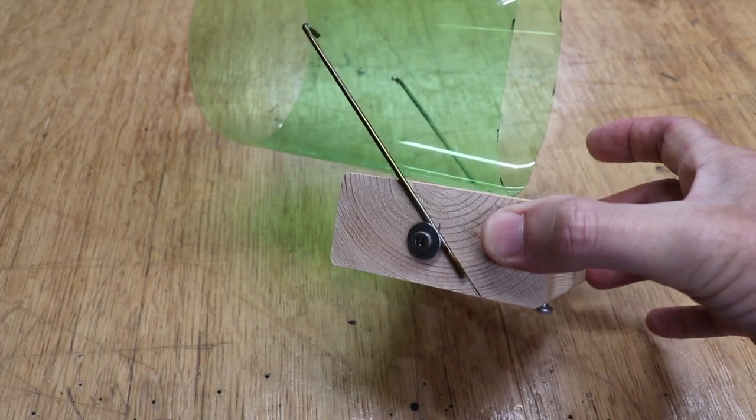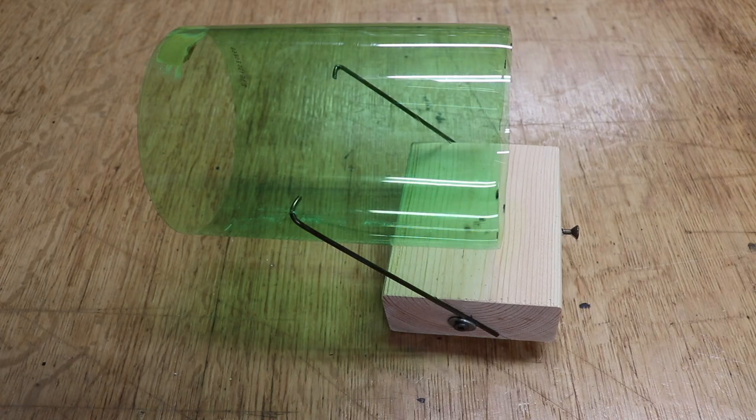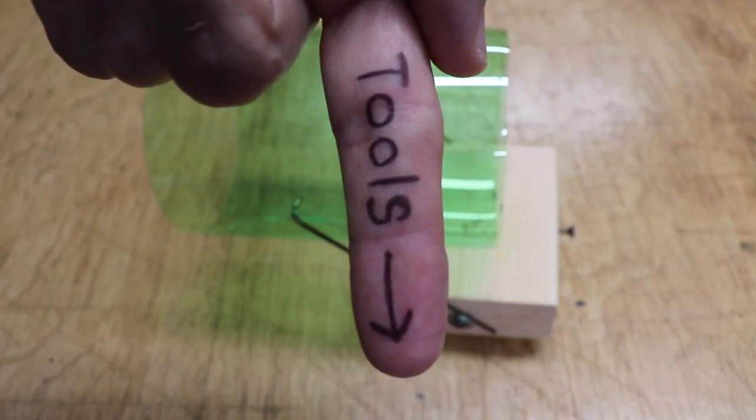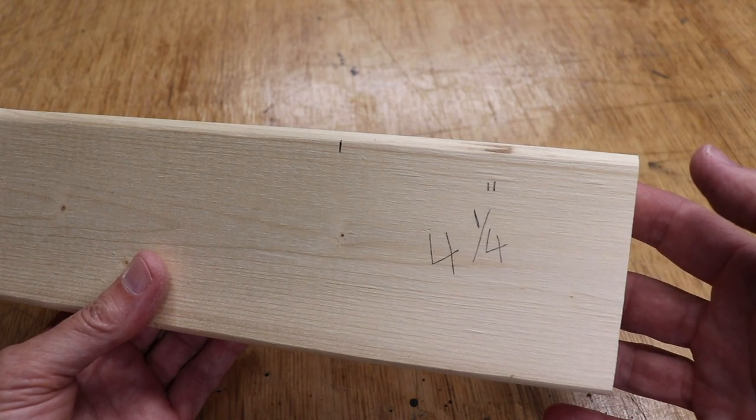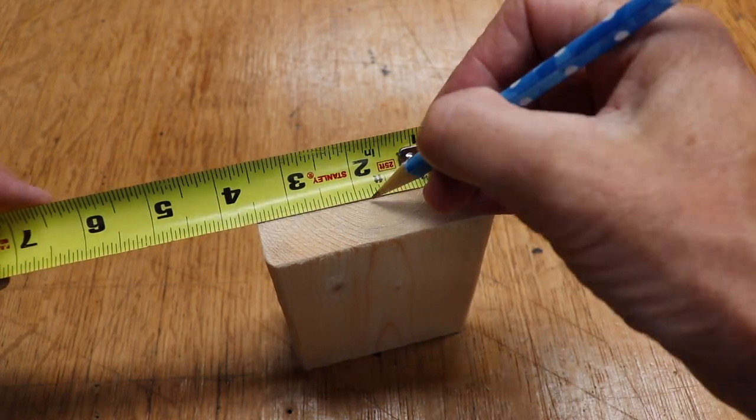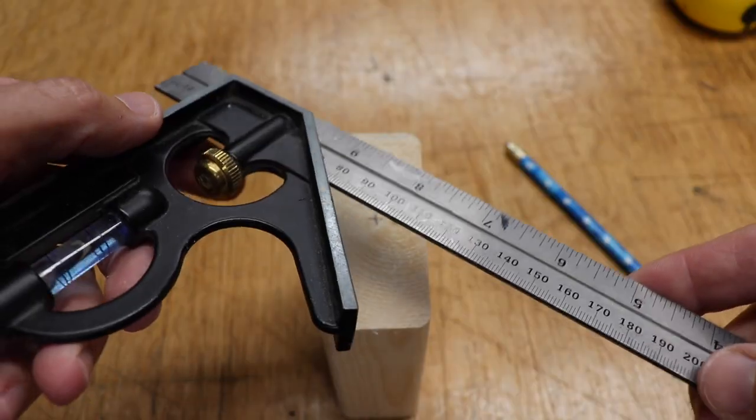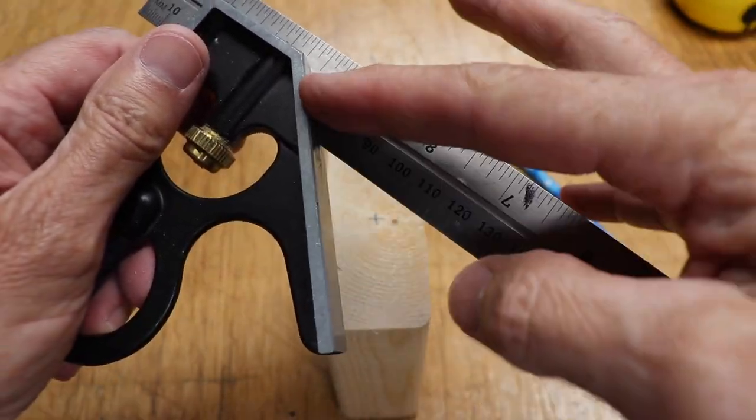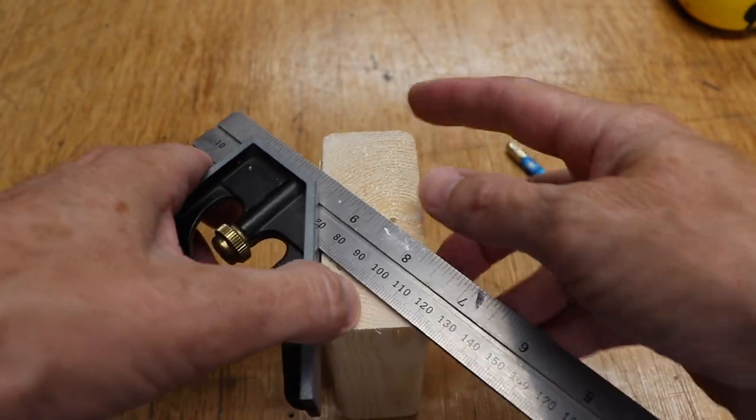So let me show you how to make one of these. And before I forget any of the tools we use today will be in the description below. So first get yourself a 2x4 and cut a piece that's four and a quarter inches long. And now measure and find the center on both ends. Now take your square and use the 45 degree part and make a line right through the center of your mark.